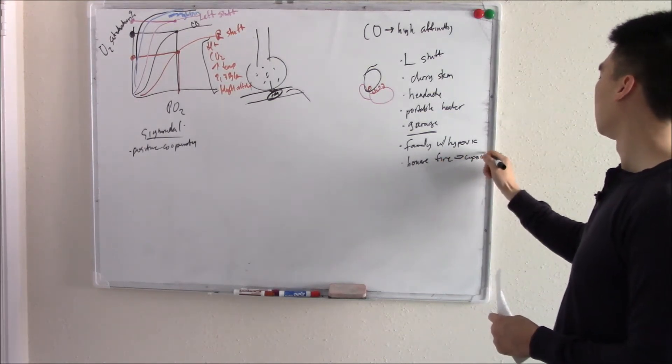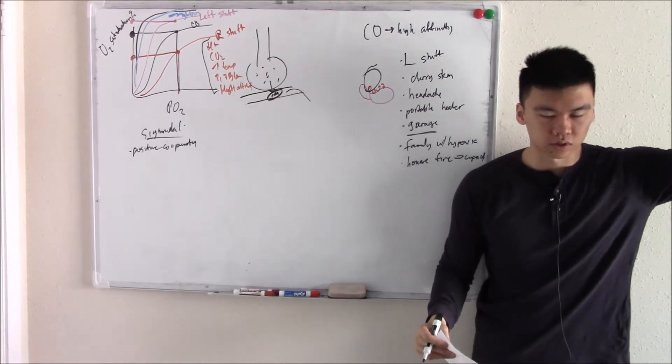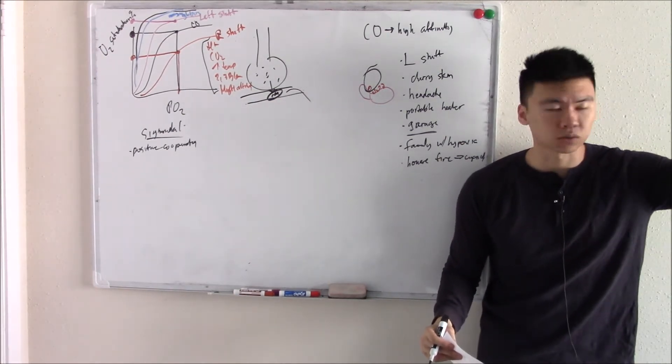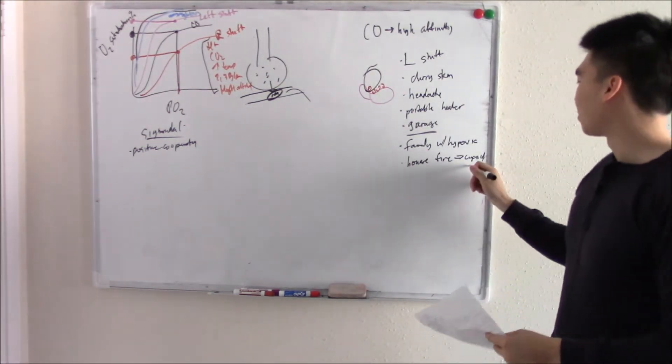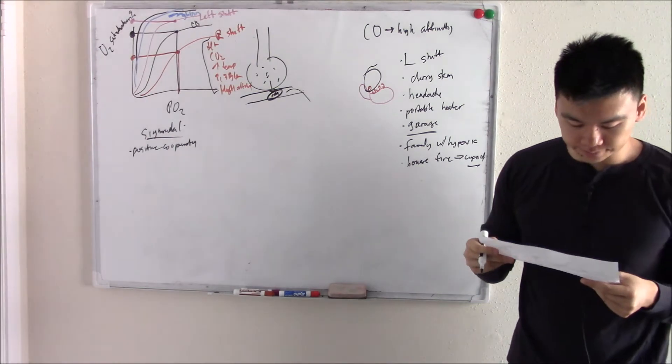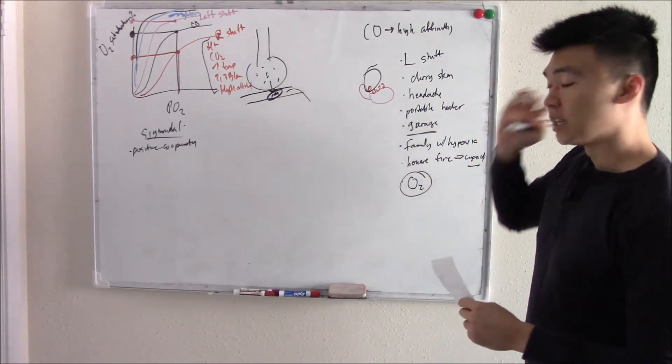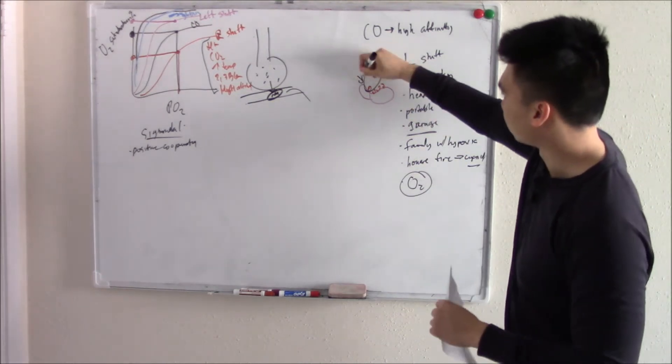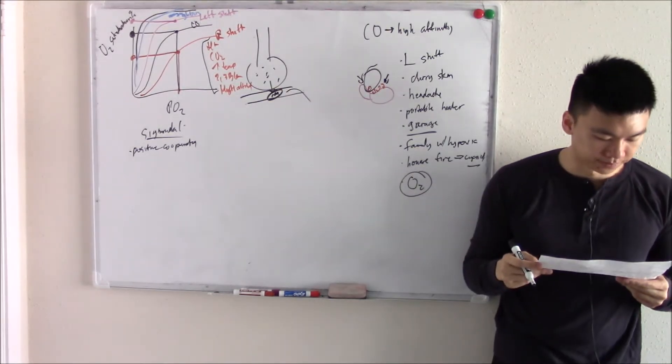House fires also release a lot of cyanide. Not because fire releases cyanide, but your upholstery, your tapestry has cyanide compounds, which is not a problem until it goes up into flames and then it releases everywhere. So we can have cyanide poisoning. How do you treat carbon monoxide? Give oxygen. If you give enough oxygen, it'll displace that CO and all will be well.